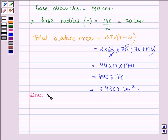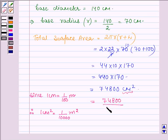Since 1 cm equals 1/100 m, therefore 1 cm² equals 1/(100 × 100), that is 1/10,000 m². Thus the total surface area, which is in cm², to change it into m², we have to divide it by 10,000. And this gives us 7.48 m².